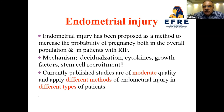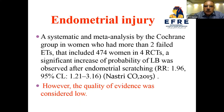Endometrial injury has been proposed as a method to increase the probability of pregnancy both in the overall population and in RIF patients. The probable mechanism involves improving decidualization, cytokine release, and growth factor recruitment. Current published studies are of moderate quality. A systematic review and meta-analysis by Cochrane in women with more than two failed cycles — including 474 women in four randomized controlled trials — showed a significant increase in probability after endometrial scratching, though the quality of evidence was considered low.